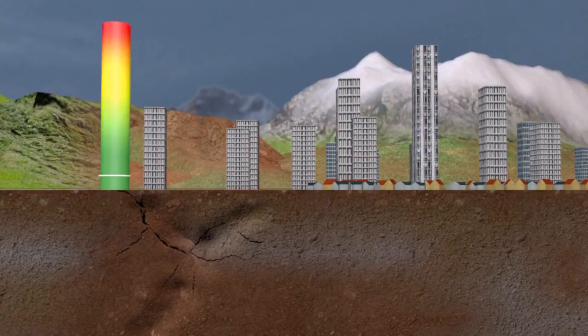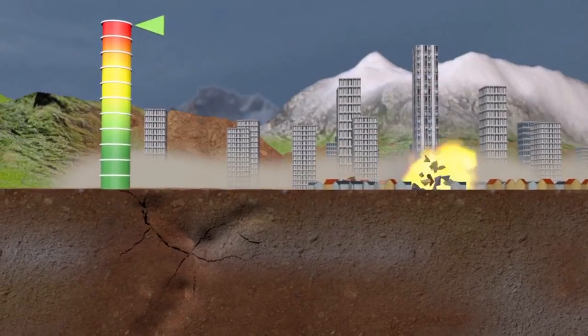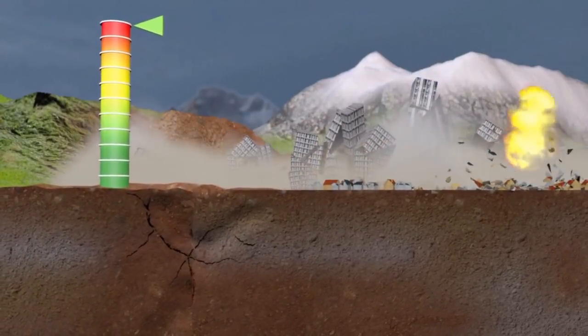The European Macroseismic Scale, meanwhile, rates intensity - in other words, possible consequences. There are 12 levels. One indicates the earthquake cannot be felt, while 12 indicates a total change in landscape.